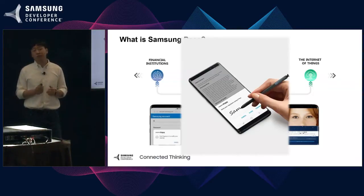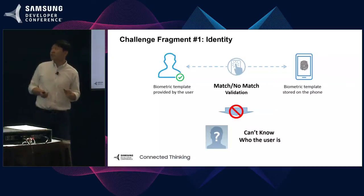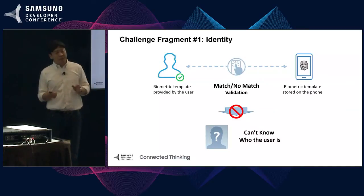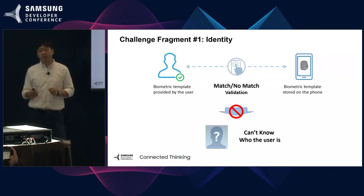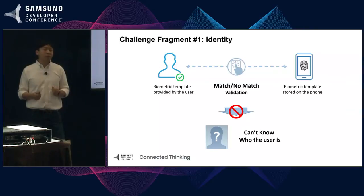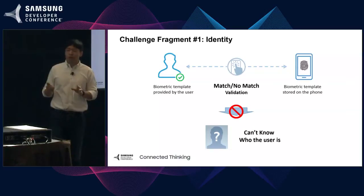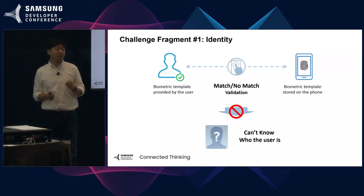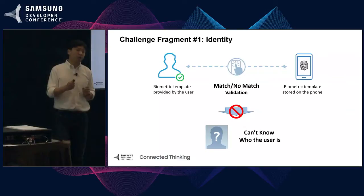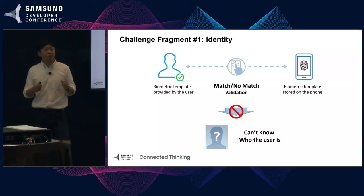Let me share some of the challenges we've faced and think through how we could potentially overcome them. The first challenge is with identity. If you think about biometric authentication done today, you're basically comparing the biometric template stored on the phone versus a biometric scan done by the user. You get a match or no-match result, but you never really get any information about the user — you're never really able to tell who's sitting behind the phone. But what if you could tie identity information to biometrics — not just any biometrics, but verified biometrics? Your smartphone could actually become a hub that bridges your digital identity with your physical identity.